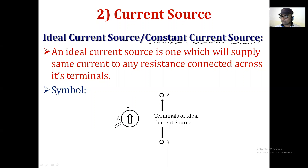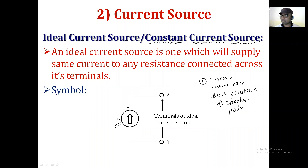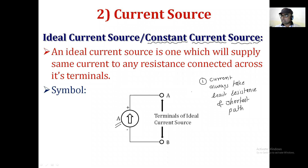This is the ideal case — it is an imaginary concept; practically it doesn't happen like that. Practically the current may vary based on internal resistance. As we know, the current can be divided in a parallel circuit only. One basic property of current is that current always takes the least resistance path and the shortest path. This is the basic property of current.